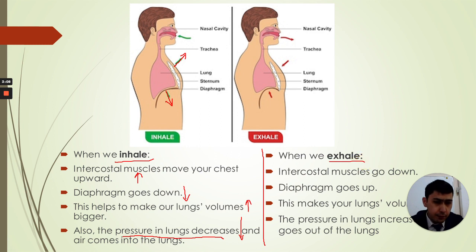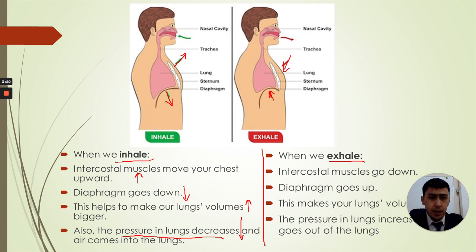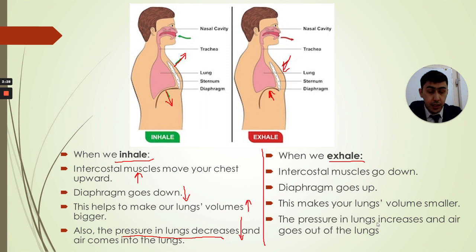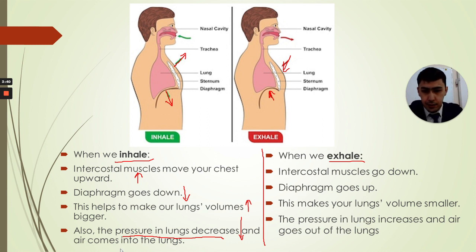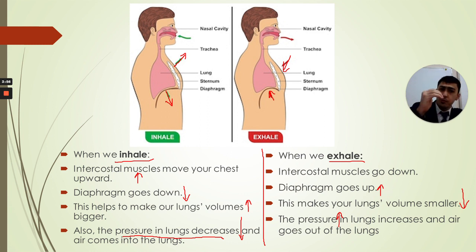In the case of exhale, everything is different. The intercostal muscles move the chest down, and the diaphragm goes up — it relaxes. The pressure in the lungs increases, which pushes all the air inside the lungs outside. The volume also decreases. So during exhale: pressure increases, volume decreases, diaphragm goes up and relaxes back to dome shape, and intercostal muscles move the chest down.